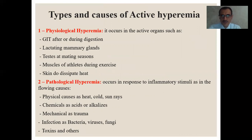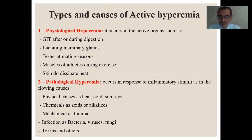Types and causes of active hyperemia: physiological hyperemia occurs in active organs such as the gastrointestinal tract after a meal, during digestion, lactated mammary glands, testes at mating seasons, muscles during exercise, and skin to dissipate heat. Pathological hyperemia occurs in response to inflammatory stimuli, including physical causes such as heat, cold, sun rays; chemicals such as acids or alkalis; mechanical causes such as trauma; infections such as bacteria, viruses, fungi, toxins, and others.